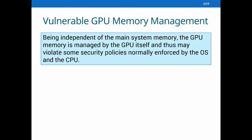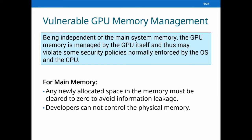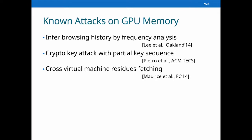GPUs are originally designed to provide high-speed computation power, but data security is not considered very well. One example is the vulnerable GPU memory management. Being independent of the main system memory, the GPU memory is managed by the GPU itself and may void some security policies normally enforced by the OS and CPU. For main memory, any newly allocated space must be cleared to zero to avoid information leakage, but for GPU memory this security guarantee doesn't exist. Previous research has studied security implications such as inferring browsing history and crypto keys.